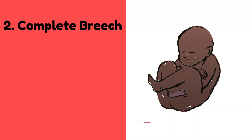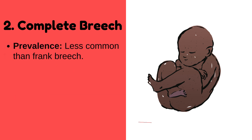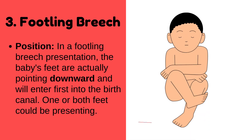Number two: complete breech. In this position, the fetus is sitting with flexion of both hips and both legs, resembling a cross-legged position — it looks like a tucked position. Complete breech is less common than frank breech. Vaginal delivery may be possible but is often more challenging.